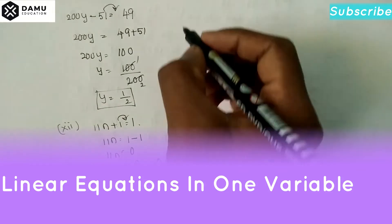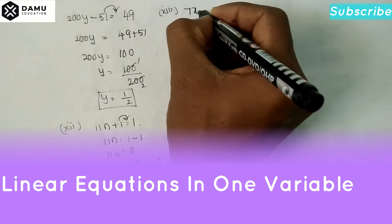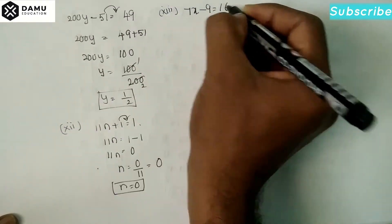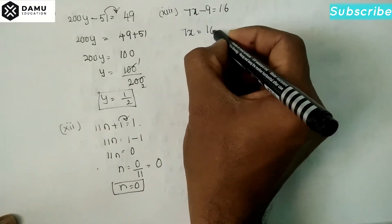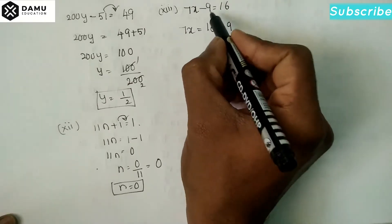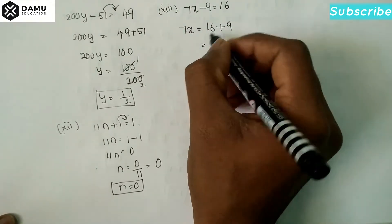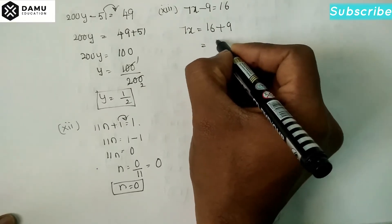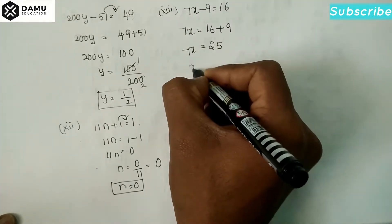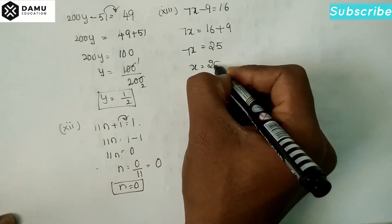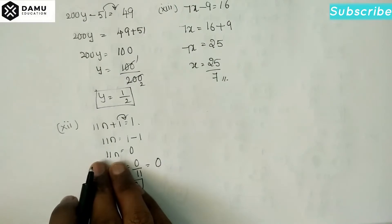The thirteenth one: 7x - 9 = 16. Keep 7x here; -9 shifts to the right side and becomes +9, so 7x = 16 + 9 = 25. Therefore x = 25/7.